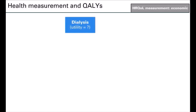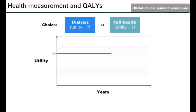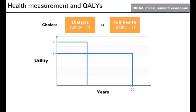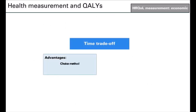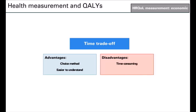The time trade-off technique establishes the utility of a described health state by asking a respondent to choose between two lives — for example, living on dialysis for 20 years or living with perfect health for a shorter lifespan. The length of life in perfect health is varied until the respondent is indifferent between the two options. For more severe health states, they will be willing to accept a shorter lifespan in order to live in perfect health. The utility of dialysis is calculated as the time spent in perfect health divided by the time spent on dialysis. Like standard gamble, time trade-off has the advantage of being a choice-based technique and has the added advantage that probabilities are not involved, so it is easier for respondents to understand. However, it is still time-consuming and does not have such a strong theoretical basis.